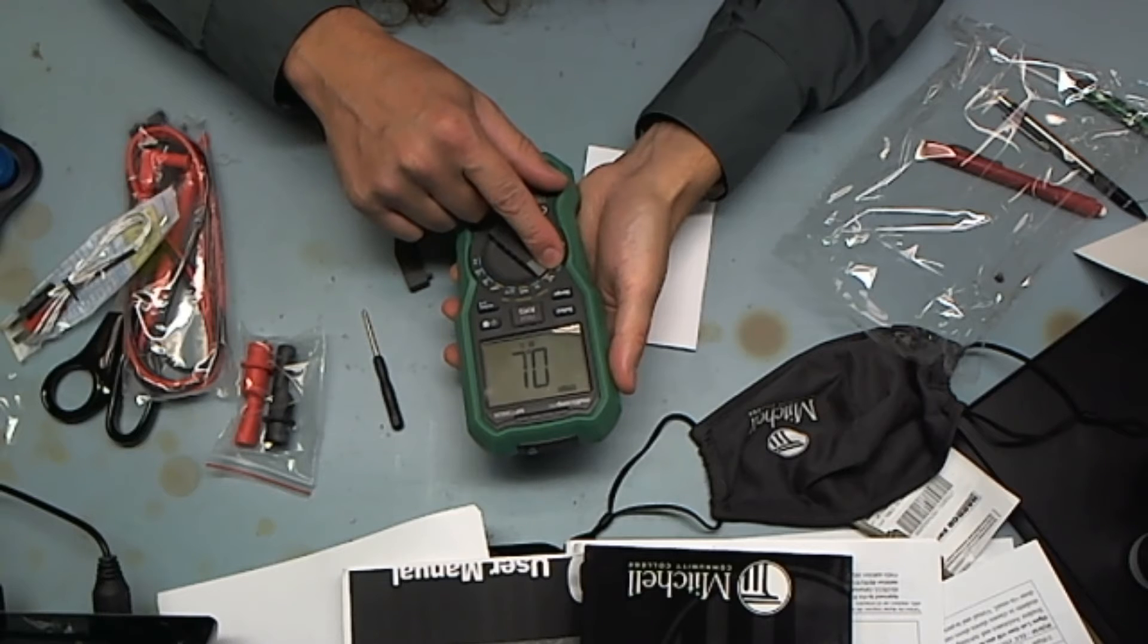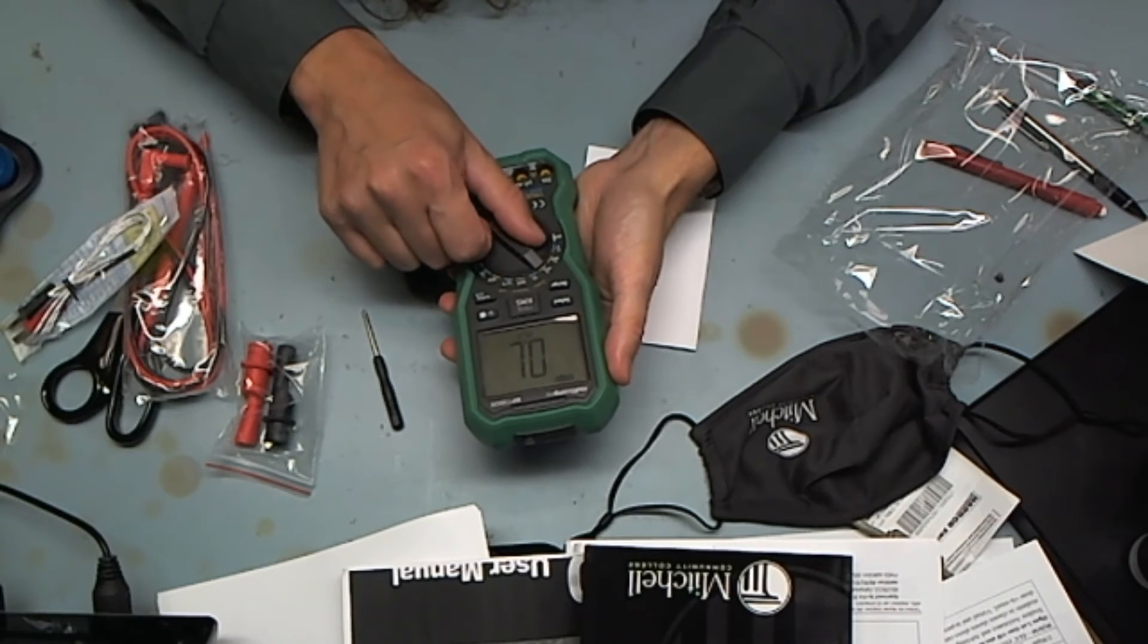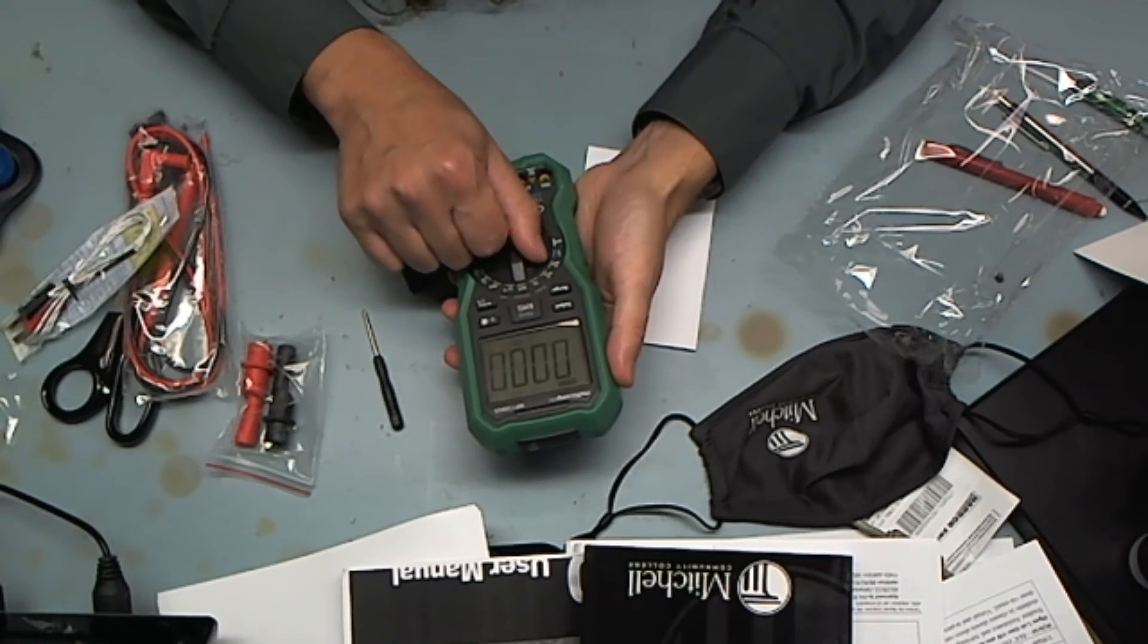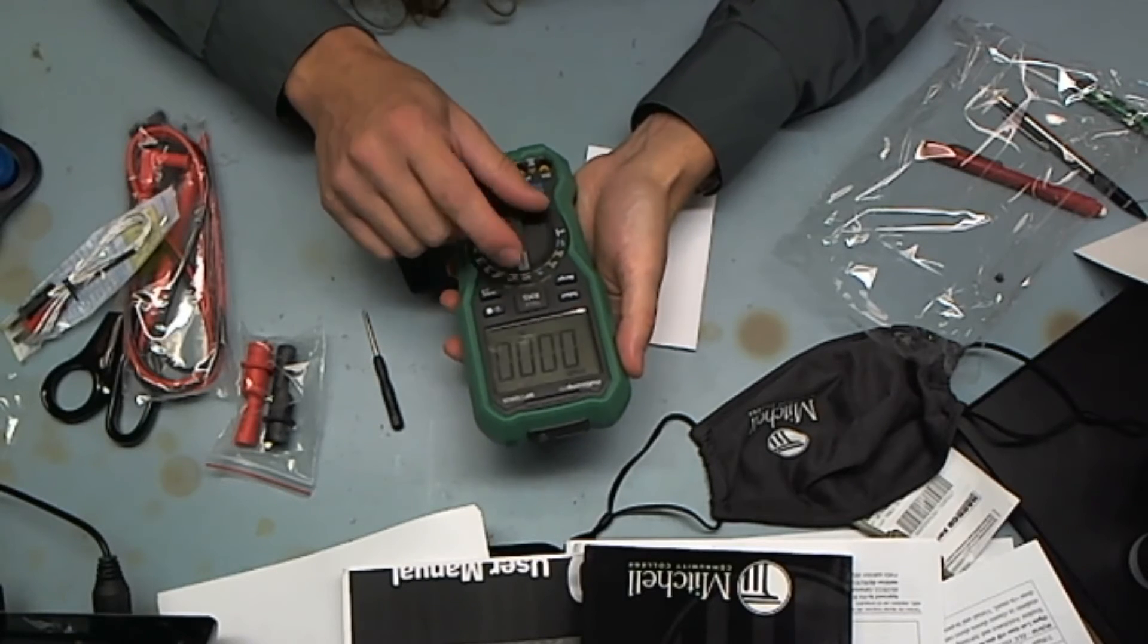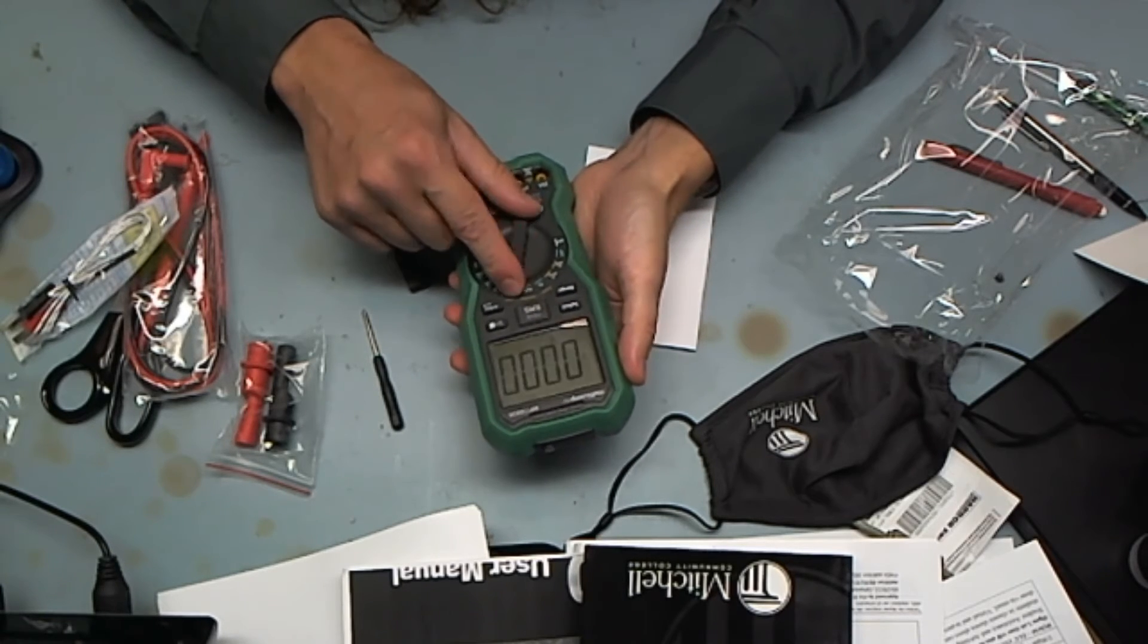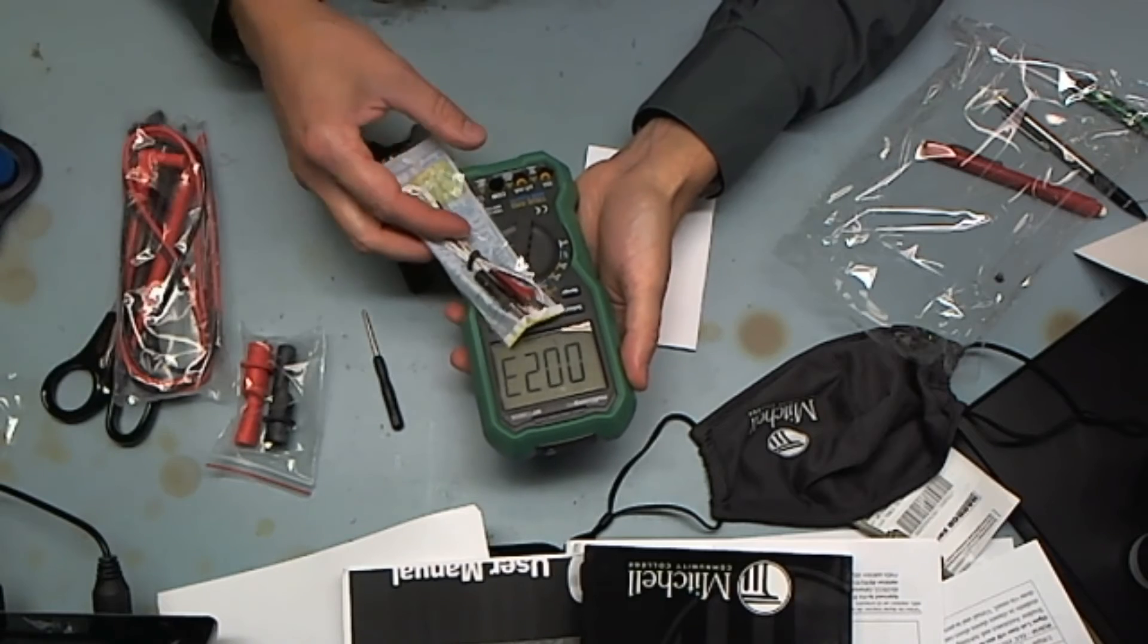We've got diode, resistance and continuity, capacitance, frequency. My Fluke don't even have that, or no the Fluke does have it. Temperature sensor, and NCV non-contact voltage.